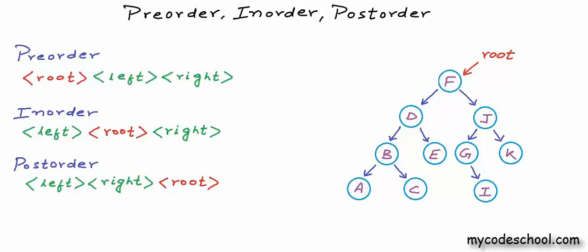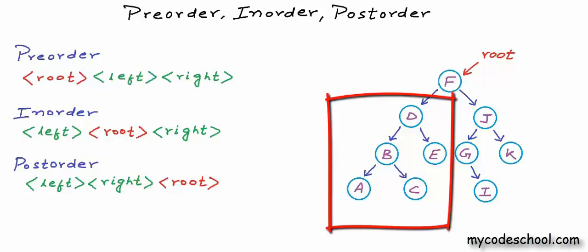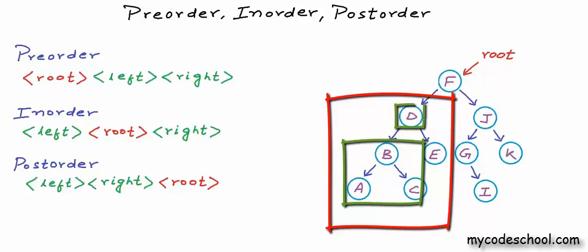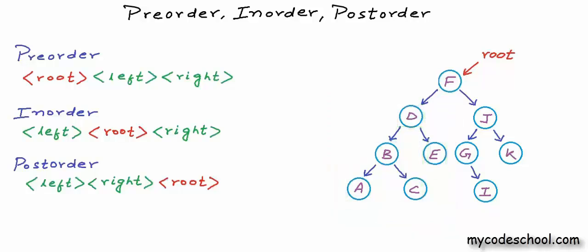Left and right subtrees will be visited recursively in the same manner as the original tree. So in pre-order, for each subtree we go root, left, then right. In in-order, we keep going left, root, then right. The actual implementation of these algorithms is really easy and intuitive.